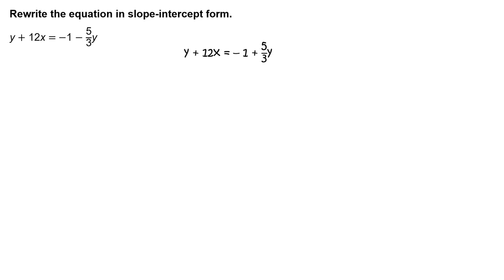First, write the original equation: y plus 12x equals negative 1 minus five-thirds y.